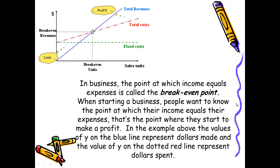For example, in business the point at which income equals expenses is called the break-even point. When starting a business, people want to know the point at which their income equals their expenses because that's where they start to make a profit. If we look at this graph, on the x-axis we have the number of sales units — this could be the number of items produced or sold by a company — and on the y-axis we have the dollar amounts.